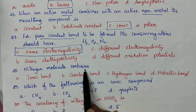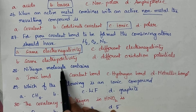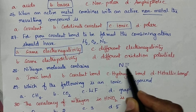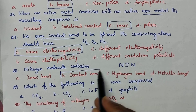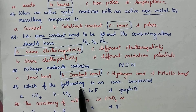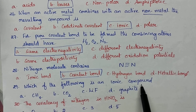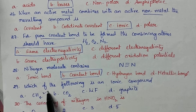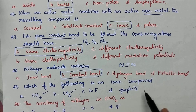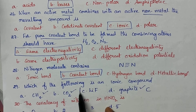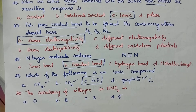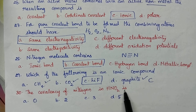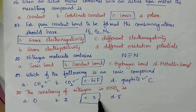Nitrogen molecule contains: a covalent bond is present in the nitrogen molecule, so option B is the right answer. Which of the following is an ionic compound? In organic molecules covalent bonds are present — methane, carbon dioxide, and graphite (an allotrope of carbon) all contain covalent bonds, so option C is the right answer for the ionic compound. The covalency of nitrogen in HNO₂ is 3, so option C is the right answer.